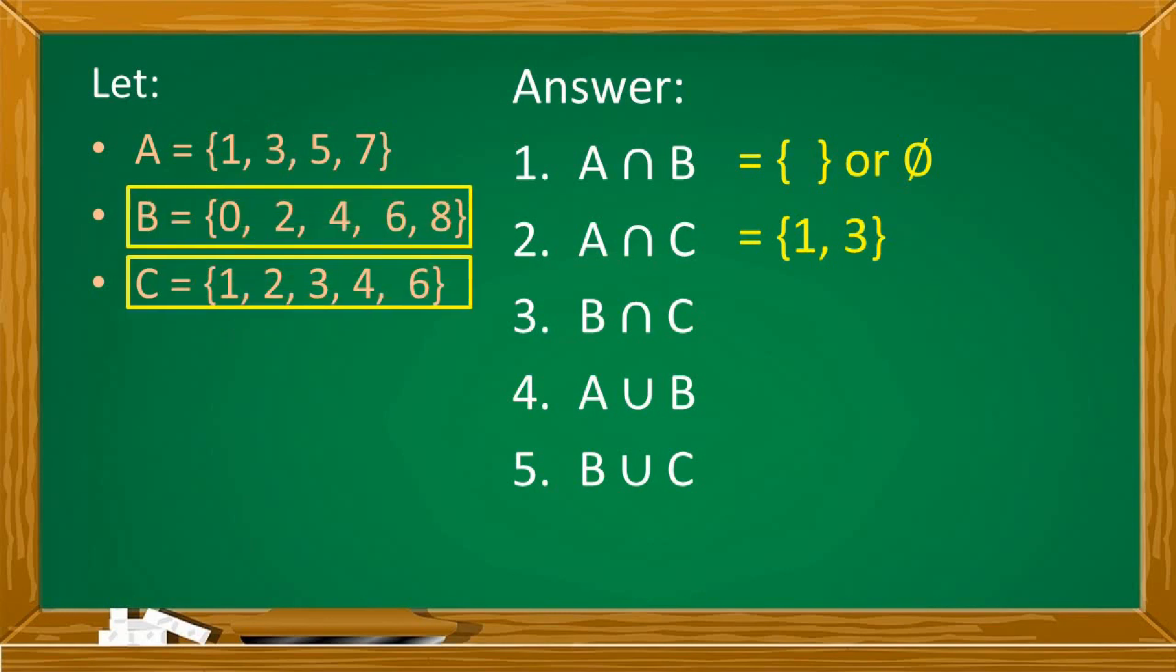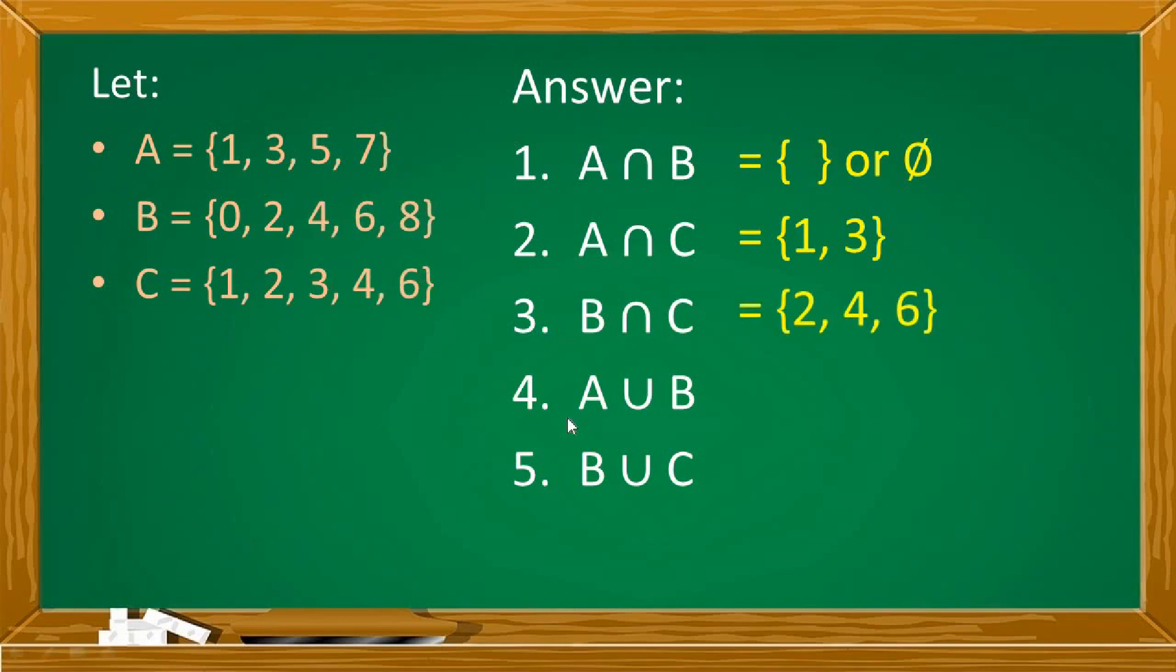Next number 3. Set B and set C. Again, what are their common elements? They both have 2, 4, and 6. So the intersection of set B and C are the elements 2, 4, and 6.